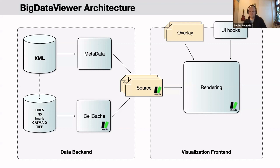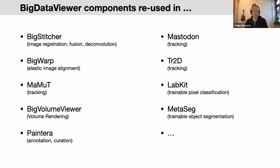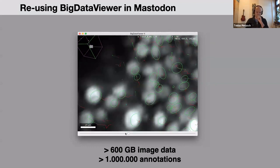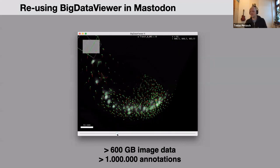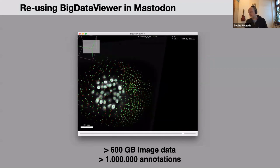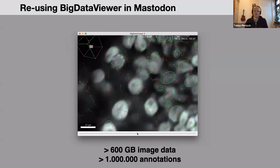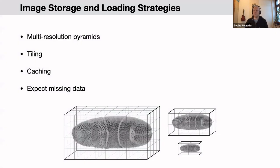This model of being reusable components has been very successful. There are several tools that use Big Data Viewer, and you will see many of them in this webinar series. For example, here is a movie of interactively browsing cell tracks in Mastodon, which reuses both the data back end and visualization front end, with custom actions and overlays of the cell tracks added on top of Big Data Viewer rendering.